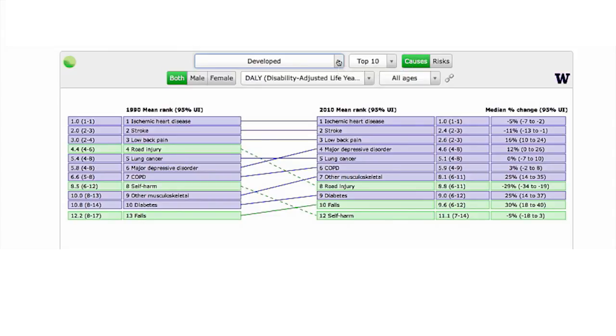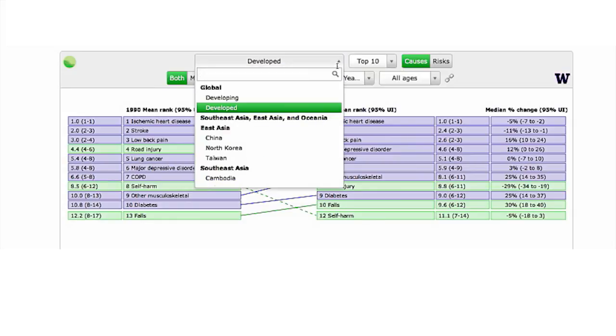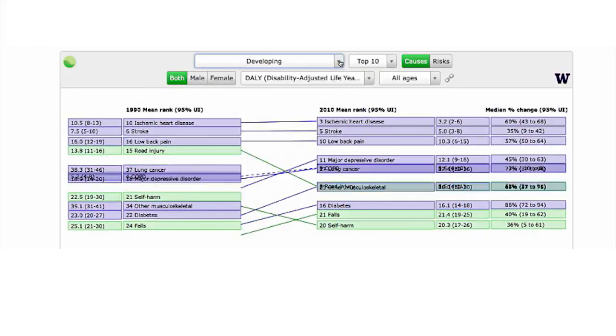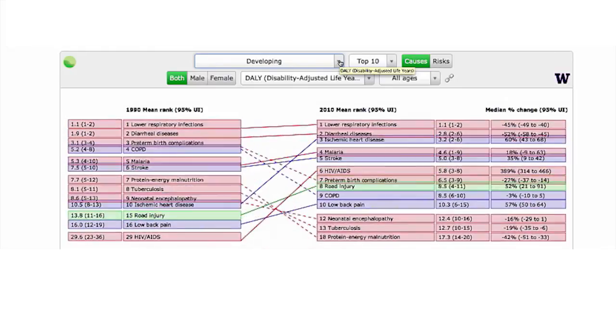If now we move to developing countries but remaining on causes of mortality, mean rankings, we see a lot more of a dominance of the red colors coming back - so communicable diseases. And we see some quite dramatic changes from 1990 to 2010. Stroke moves from number two to number one. Ischemic heart disease moves from number five to number two. COPD remains constant at number three.